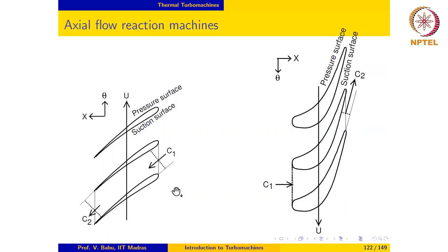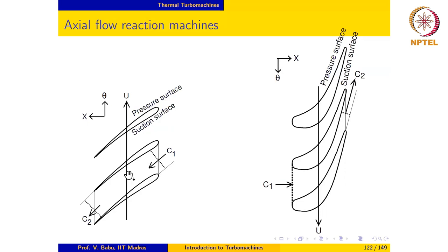In the case of a turbine, because work is produced, the enthalpy of the fluid decreases and the relative velocity increases. The change in relative velocity is not very high for an axial compressor because deceleration of the fluid causes a pressure increase — essentially a diffusion process. Since the flow faces an adverse pressure gradient, there is danger that if the pressure gradient is too high, the boundary layer on the blade surface can separate, resulting in compressor stalling and erratic performance, which must be avoided at all costs.